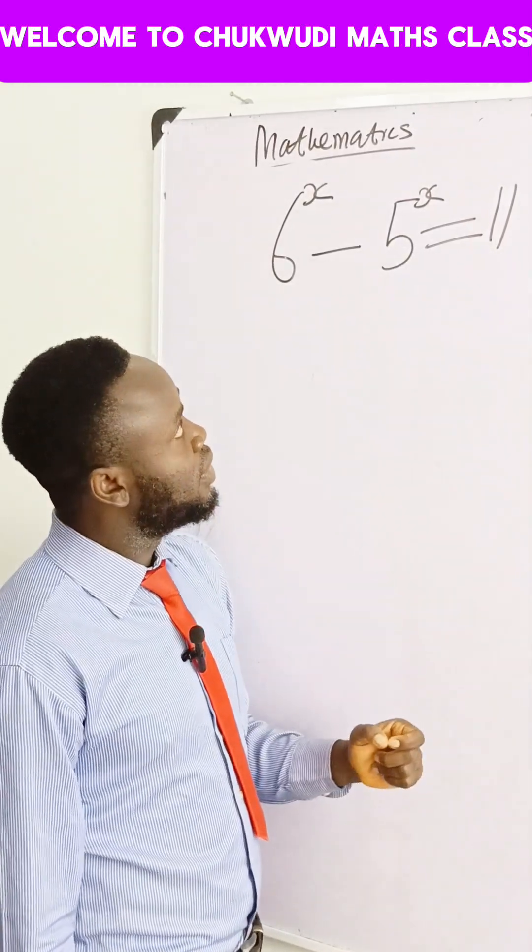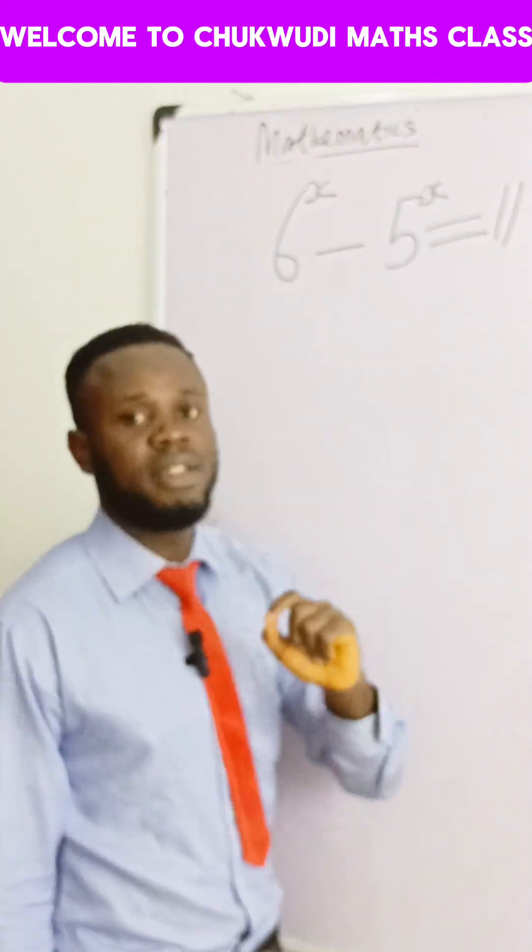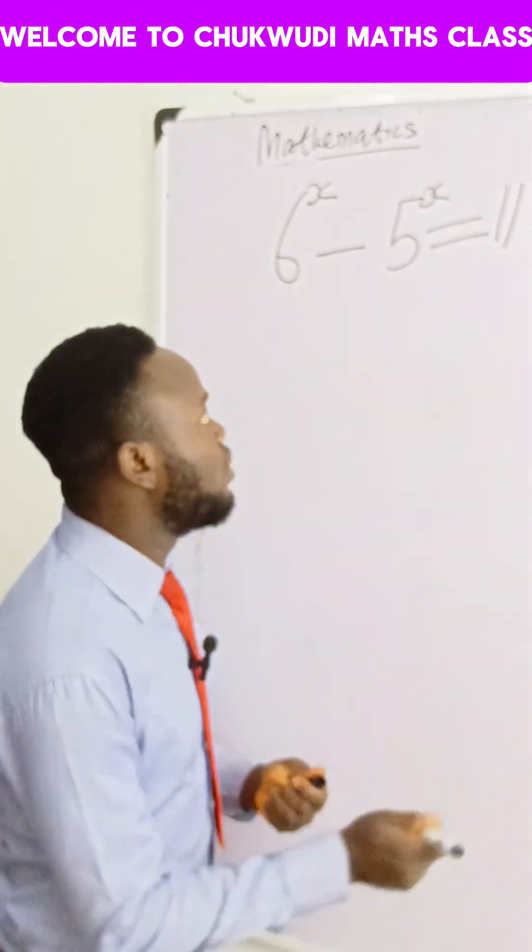If we come to 11, let's see if we can express this. We have the bases here, 6 and 5. Let's see if we can also get 6 and 5 on the right hand side. We can do that by doing this.